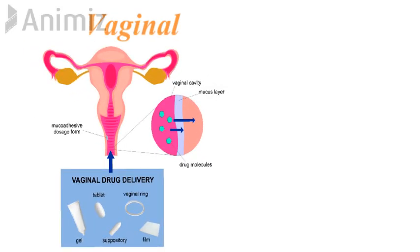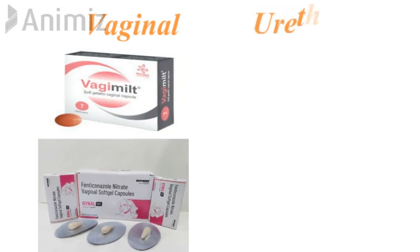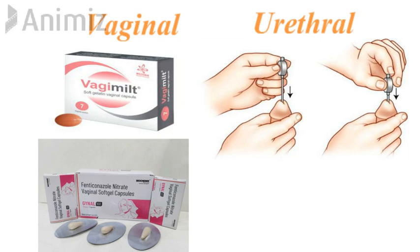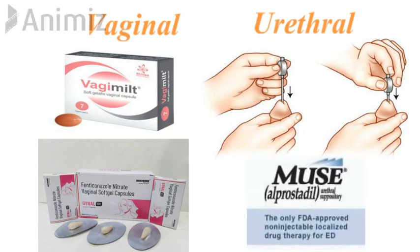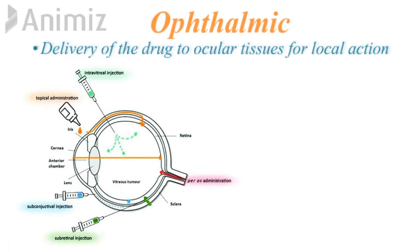Next is vaginal route of delivery. Gels, tablets, suppositories, vaginal rings, and films are given by this route, mainly for local infections and contraception. Next is urethral route of administration, in which the drug is administered via the urethra, mainly for local infections and for treatment of erectile dysfunction in males.